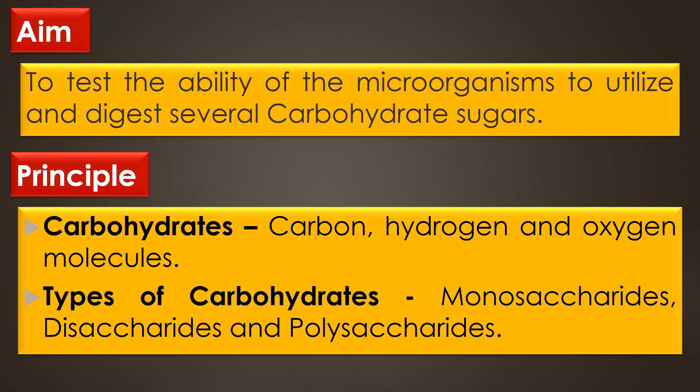Principle. Carbohydrates are biological molecules which are made up of carbon, hydrogen and oxygen molecules. There are three types of carbohydrates based on their structure and number of carbon atoms present. They are monosaccharides, disaccharides and polysaccharides. Monosaccharides are the simple sugars containing 3 to 7 carbon atoms; disaccharides comprise two monosaccharides linked together by the glycosidic bond; and polysaccharides containing 8 or more monosaccharide molecules.